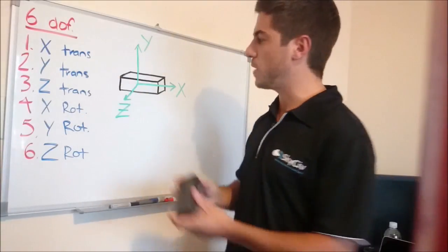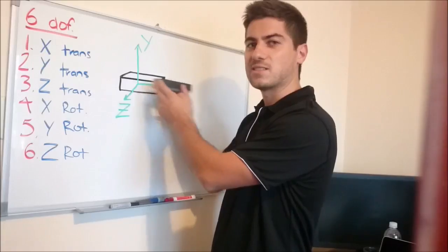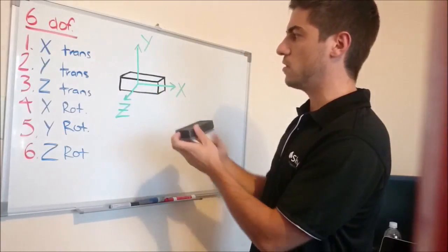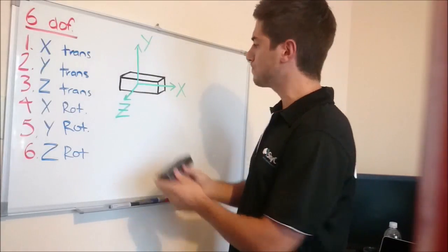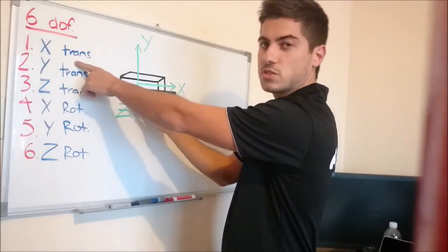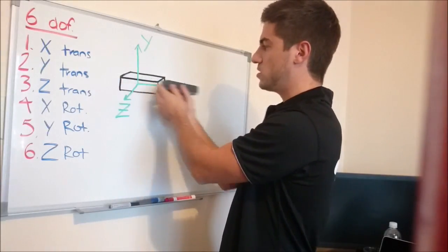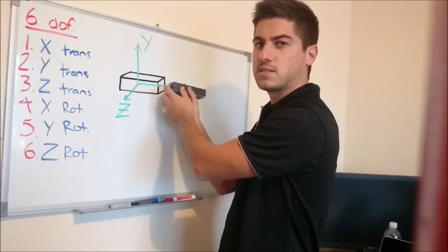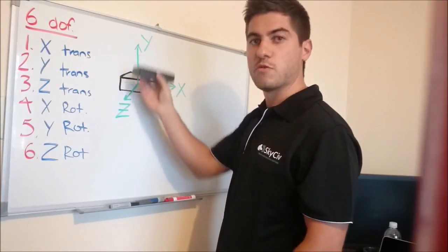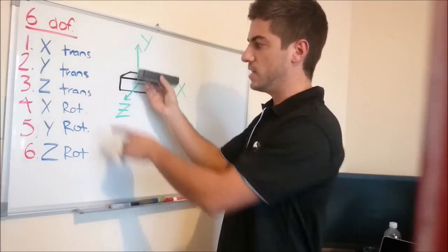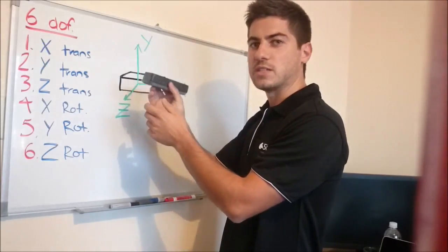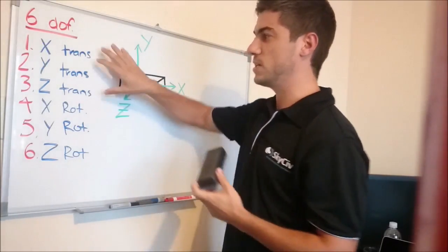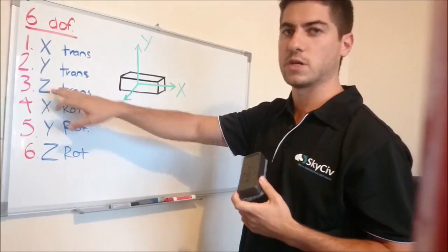Now what translation means is basically moving along an axis. So here we have the local axis of this object, which is my eraser. X translation, which is the first degree of freedom, is basically just the movement along that X axis. Likewise we have Y translation, which is just the movement up and down, and Z will be in and out of the page. So that's our translations, they make up the first 3 degrees of freedom.